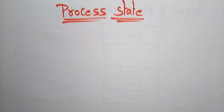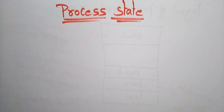Hi students. Coming to the next topic in the subject Operating System — the process state. In the previous video I explained what a process is. Now let us see what the different process states are. A process changes its states as it executes.